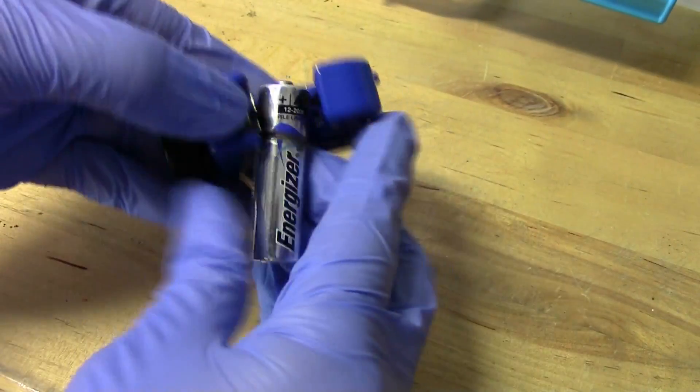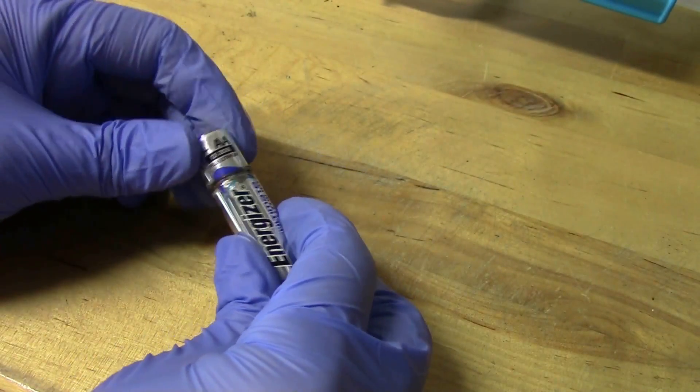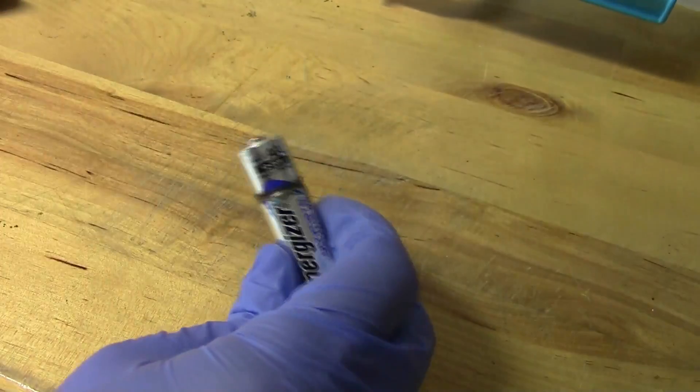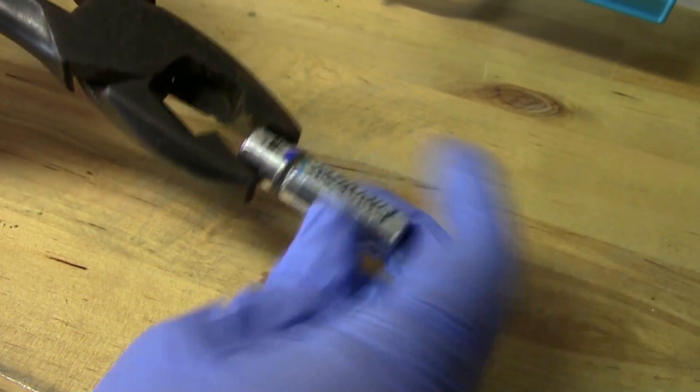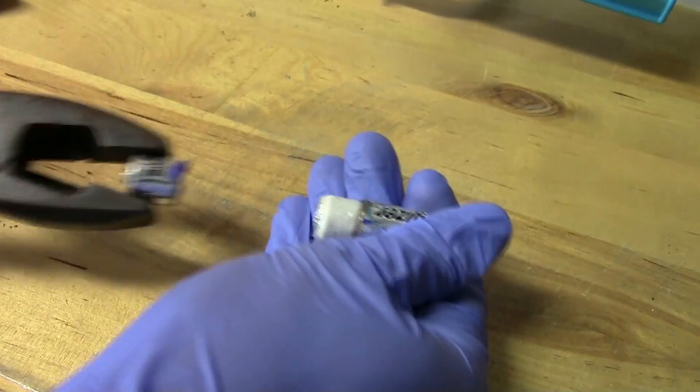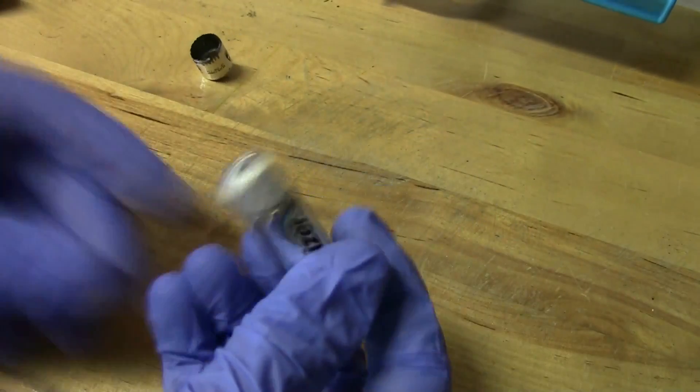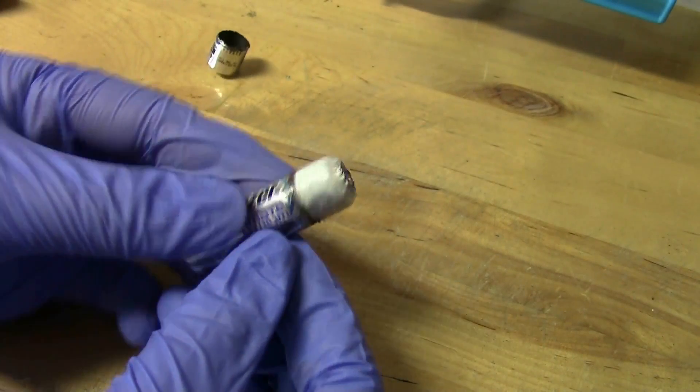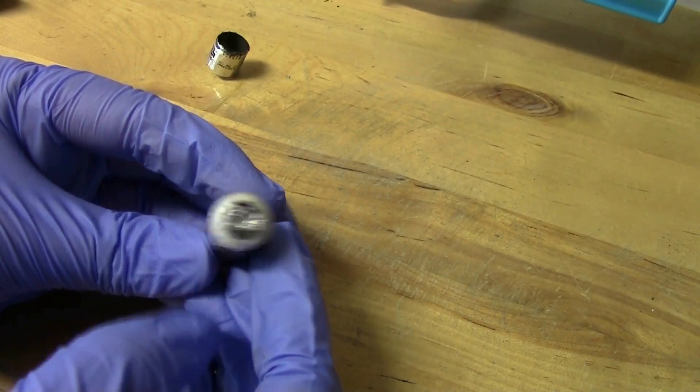All right I've got the cap off you can see it's definitely loose let's just pull that off with some pliers. Awesome awesome so there's the inside of the battery and you can see the metal foil rolled up there.